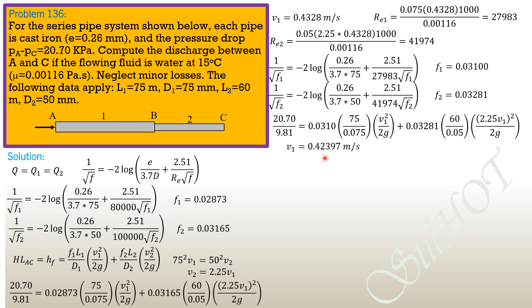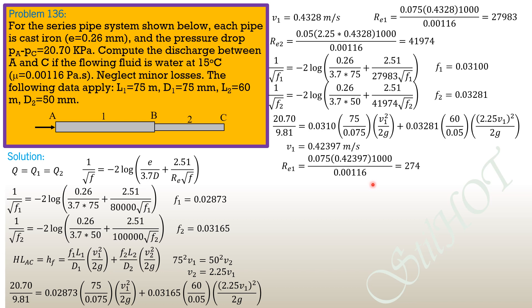To verify convergence further, Re1 equals (0.075 × 0.42397 × 1000) / 0.00116, giving 27,412, which is very close to the previous value of 27,983.